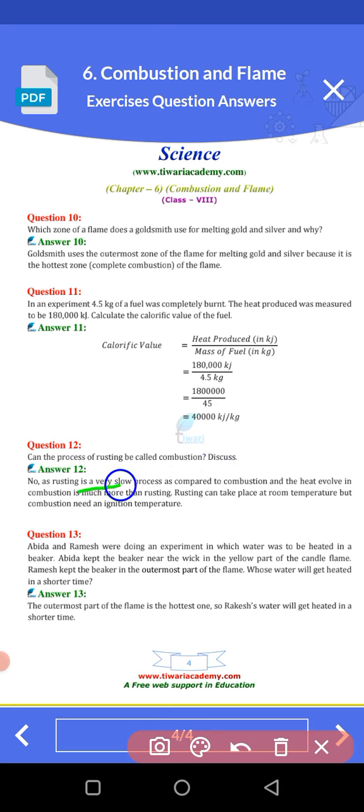Rusting is a very slow process that can be a combination with heat involved. Combustion is much faster than rusting. Rusting can take place at room temperature.